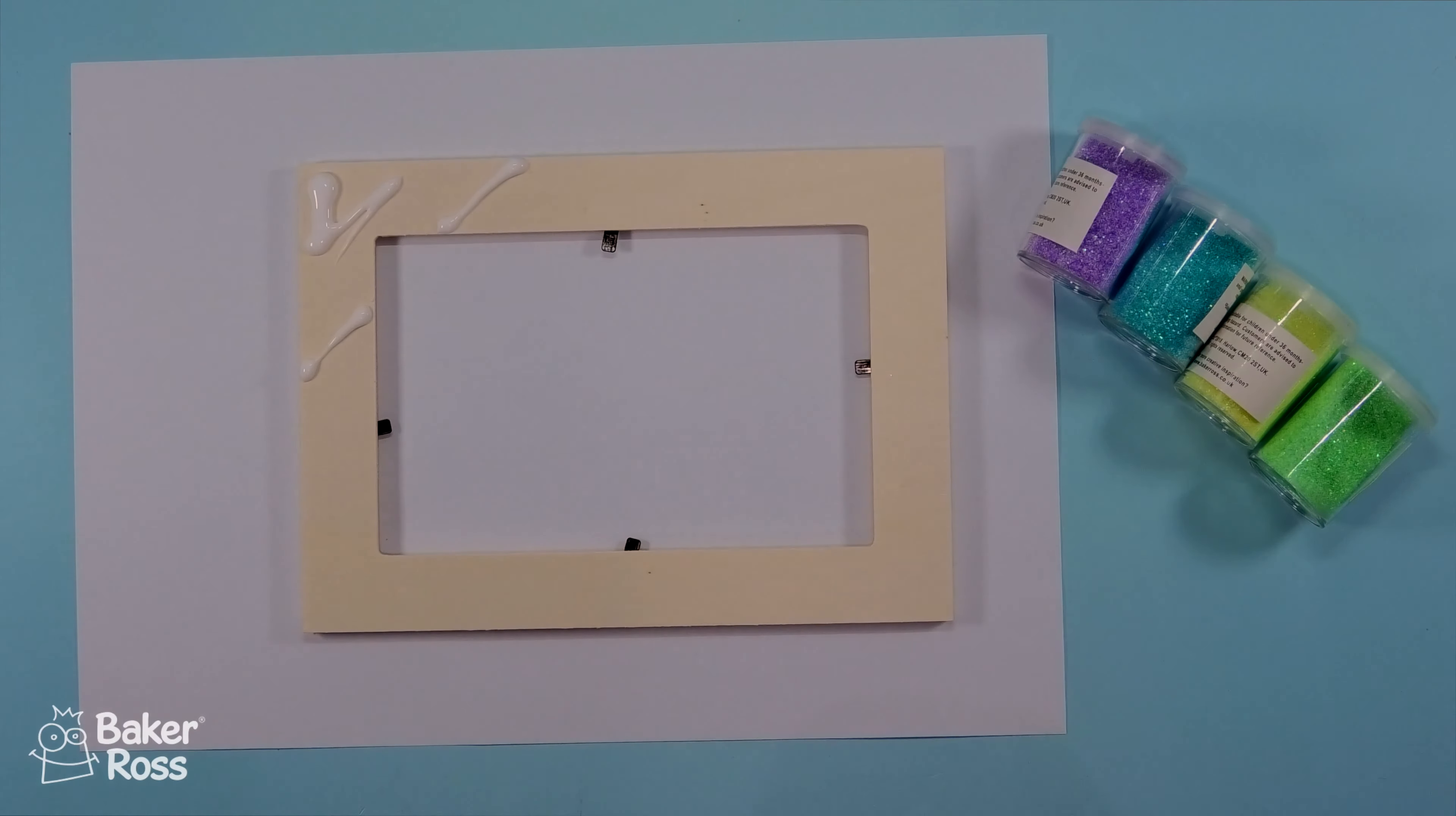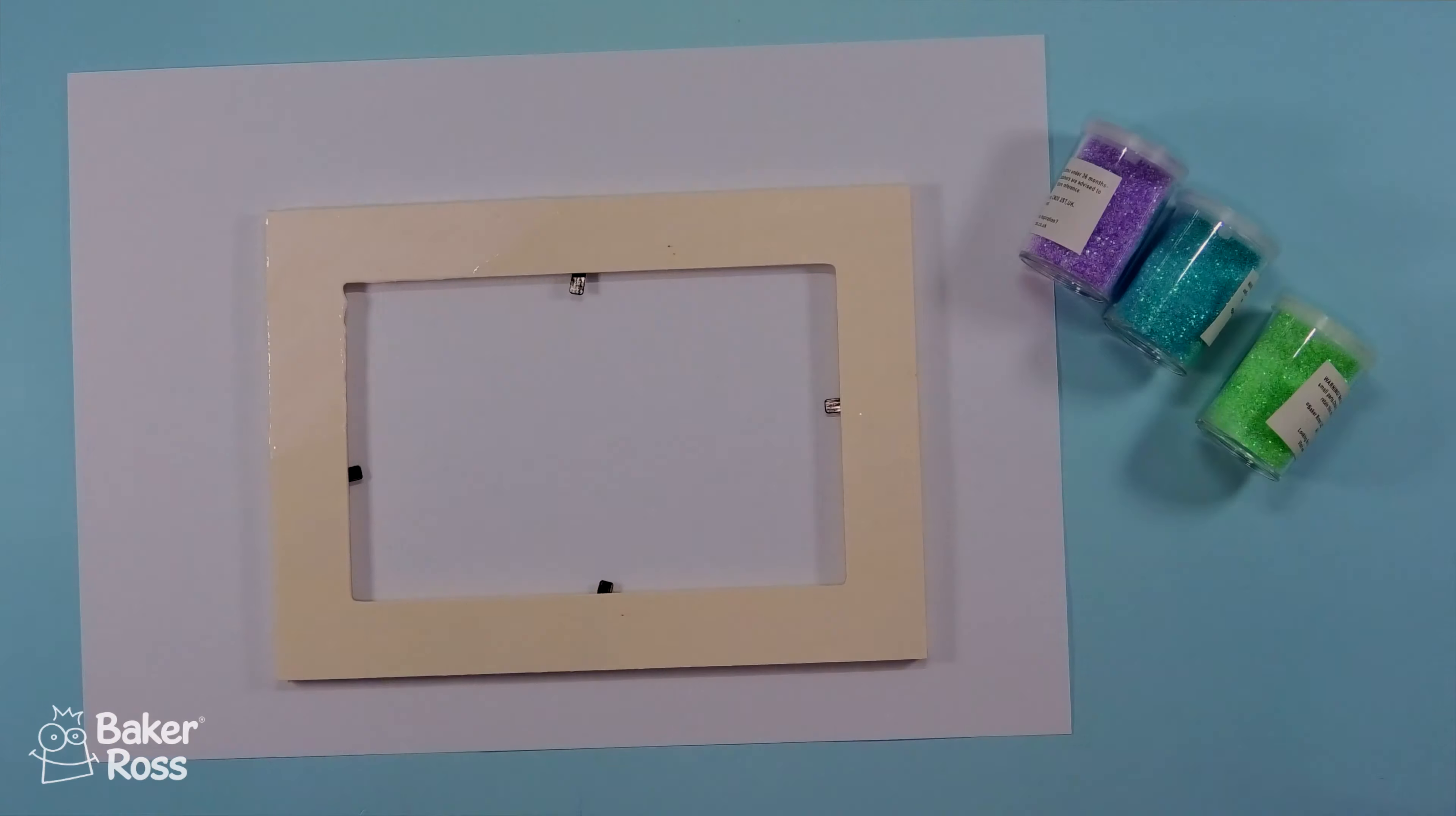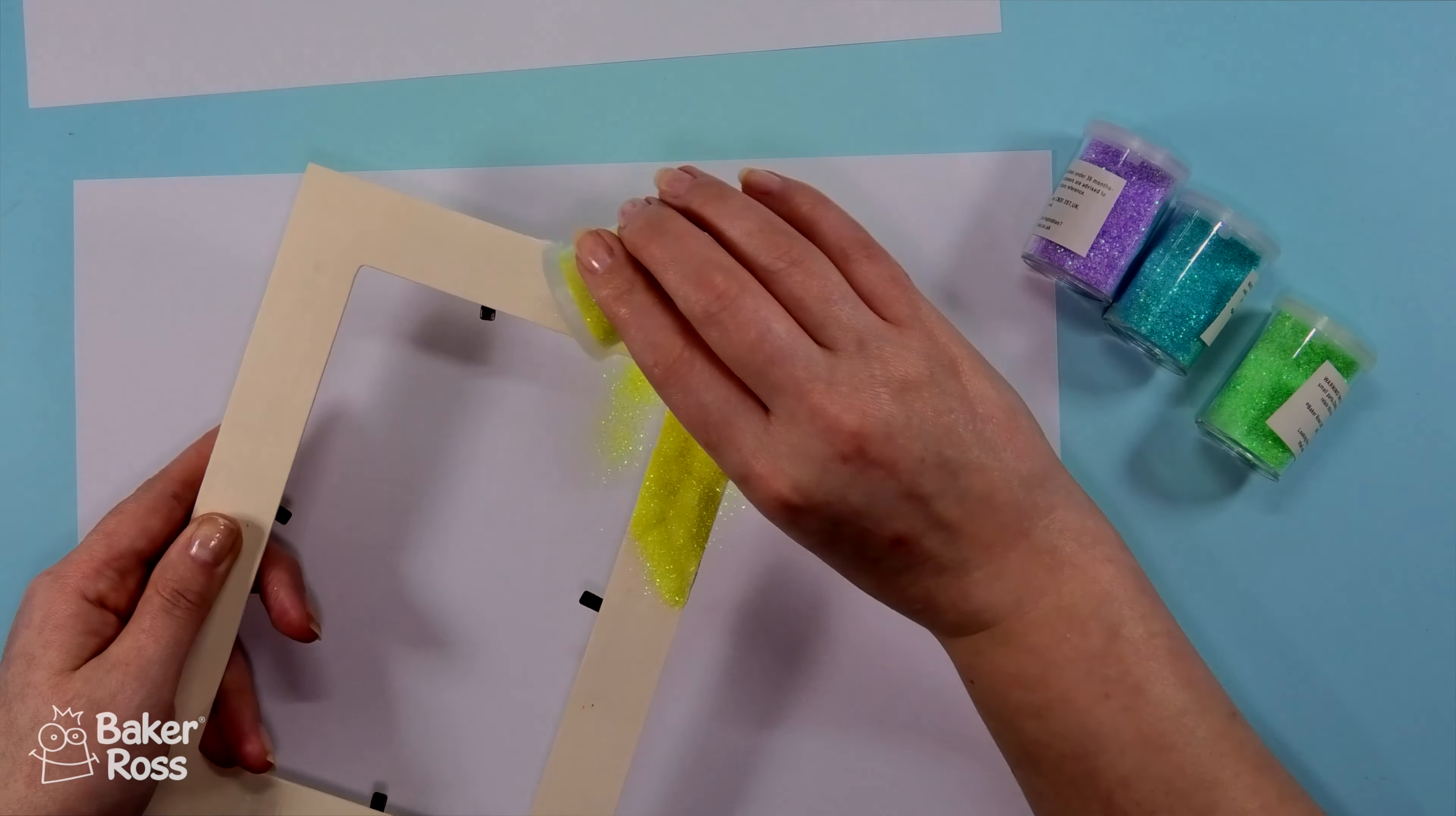Here I'm using tacky glue and I'm working on a scrap piece of paper. I'm going to use my finger to spread the glue around. I actually think that is the most effective. Now this is my top tip.